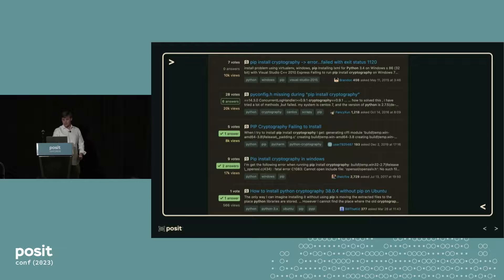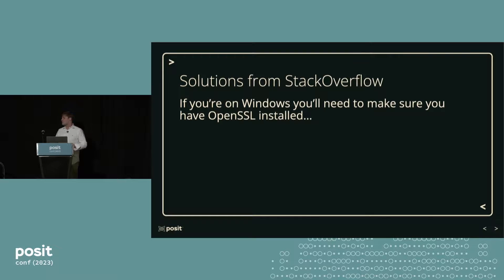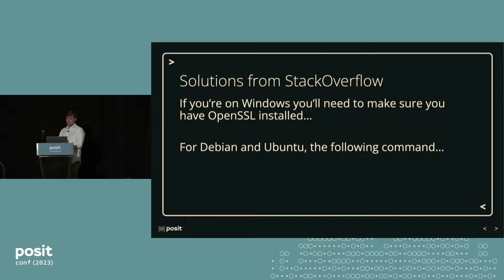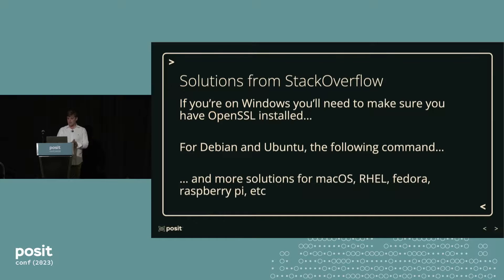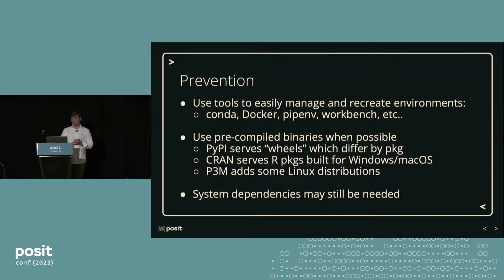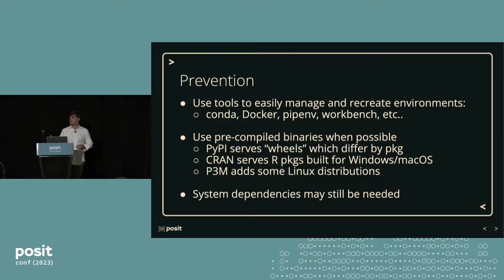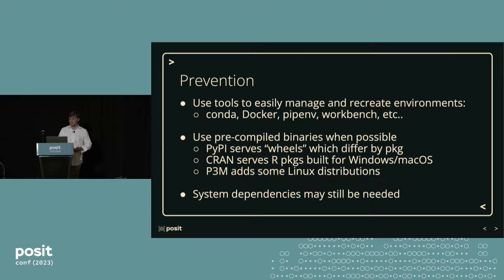This example comes from Stack Overflow — I actually found a ton of these. Looking at the solutions: if you're on Windows, you'll need to make sure you have OpenSSL installed. For Debian or Ubuntu, you need to run some other command. And there were more solutions for Mac OS, RHEL, Fedora, Raspberry Pi, etc. So again, we can prevent this. We can use tools to easily manage and recreate environments — Conda, Docker, PIFM, even Workbench works for this. We can use pre-compiled binaries when possible. PyPI will serve wheels, though some packages will have pre-compiled wheels and others won't. CRAN generally serves R packages built for Windows and Mac OS. R-universe also serves packages for Windows and Mac OS. Public Package Manager adds some Linux distributions. But in some cases we still need system dependencies installed, so there's no silver bullet here.